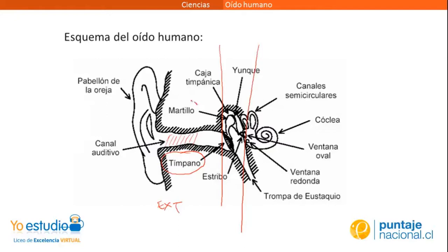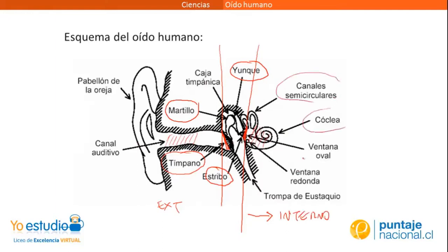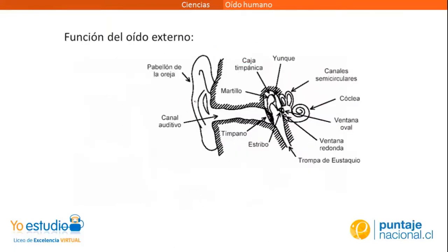Aquí en el oído medio están los tres huesitos que son parte del oído, que son el martillo, el yunque y el estribo. Que están conectados desde el tímpano, que es el límite, hasta el vestíbulo, que es el límite de lo que es el oído interno. El oído interno está lleno de líquido. Y en este oído interno encontramos los canales semicirculares, la cóclea y las ventanas ovales y redondas, que son ventanas de conexión que tiene el vestíbulo. Ahora vamos a ver la función del oído externo. La forma cónica que tiene la oreja, algo así como parabólica, no es casual. Lo que hace esta forma es conducir las ondas sonoras que vienen viajando por el aire hacia el canal auditivo. Y aquí en el canal auditivo, las ondas sonoras se transportan para llegar hasta el tímpano.